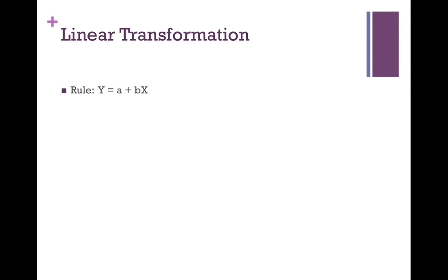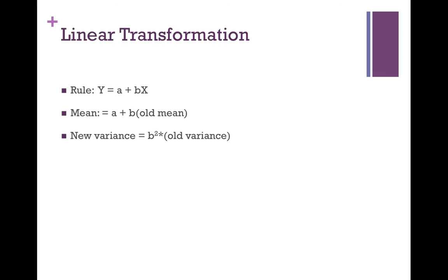This chapter also covered transformations and combinations. A transformation takes a random variable x and transforms it into y by adding a constant or multiplying by a constant. To find the mean of y, substitute the mean of x into the formula. For variance: adding a constant a does not change the spread at all, but multiplying by a constant b does. To find the new variance of y, take your constant b, square it, and multiply by the variance of x. Then take the square root to find the standard deviation of y.